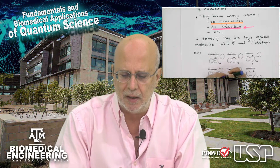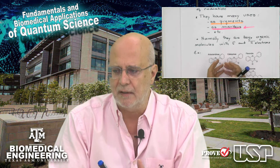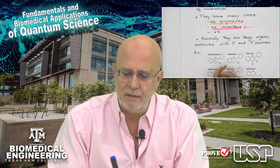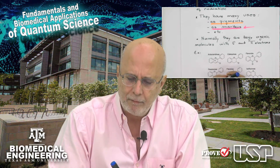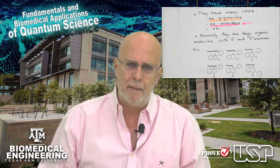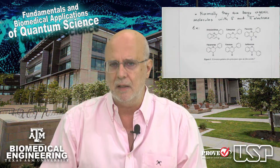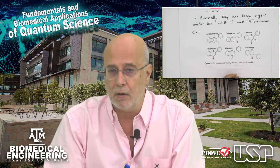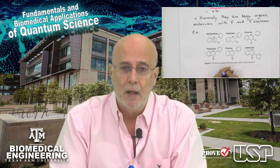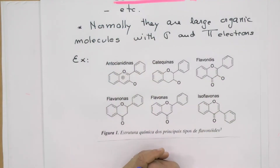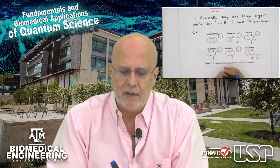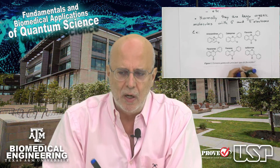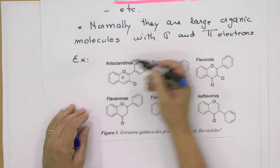In nature there are many examples of molecules that give us different colors and absorb different portions of the electromagnetic spectrum. Normally we are dealing with organic molecules. It is very common to add a metal to some important molecules, and that gives a specific color to the molecule because the metal modifies the electron distribution. Modifying the electron distribution gives us different optical properties. Normally we are dealing with large molecules.